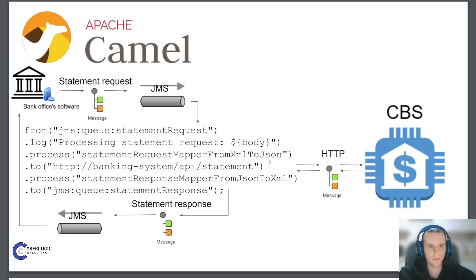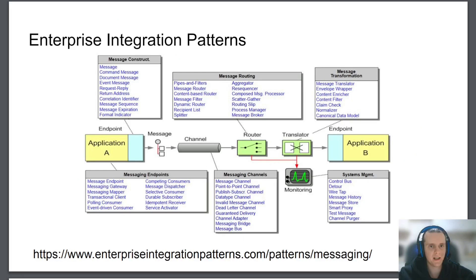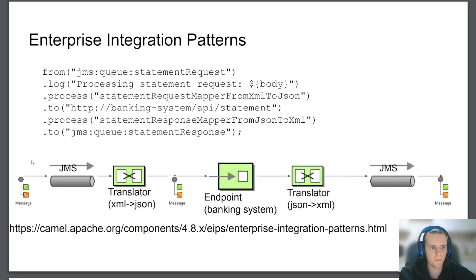Now let's talk a bit more about enterprise integration. Enterprise integration is not a new field — it is well researched and has standards that guide best practices. The most important set of standards is Enterprise Integration Patterns, or EIPs. These are tried and tested design solutions for the most common integration tasks. Even in our simplified example, we were using patterns like message — the message read from the JMS queue, transformed, and sent to the banking system and back — message channel, which are our JMS queues and HTTP URL, and translator, which is the logic that transforms messages from XML to JSON and back.